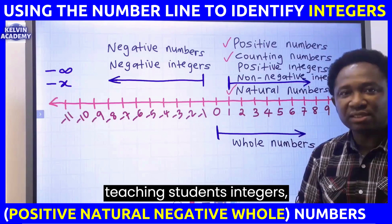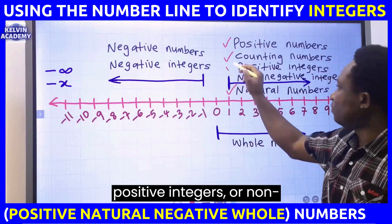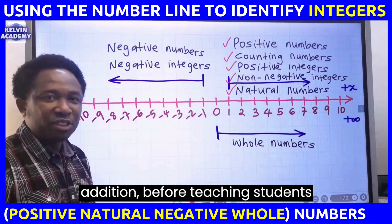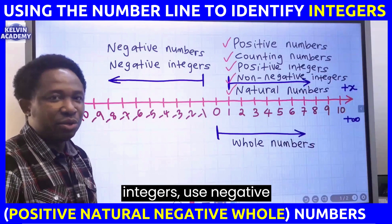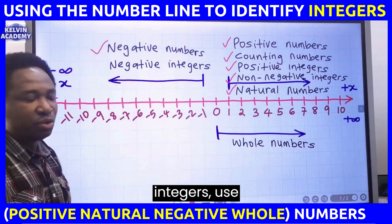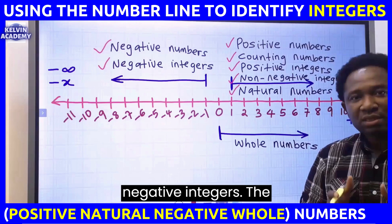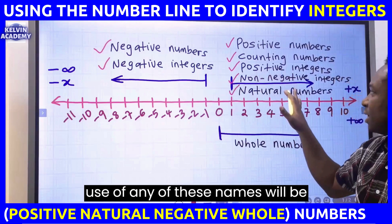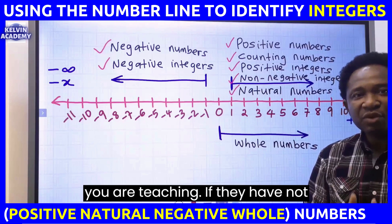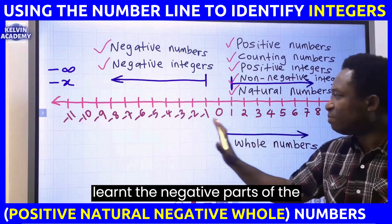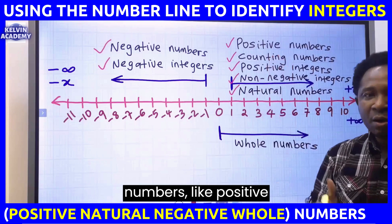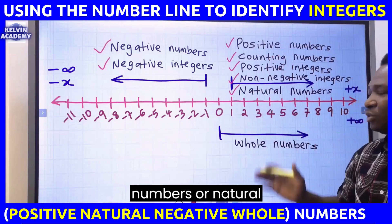After teaching students integers, use positive integers or non-negative integers. Before teaching students integers, use negative numbers, but after teaching students integers, use negative integers. The use of any of these names will be dependent on the age of the class you are teaching. If they have not learnt the negative part of the number line, simply maintain numbers, positive numbers, or natural numbers.